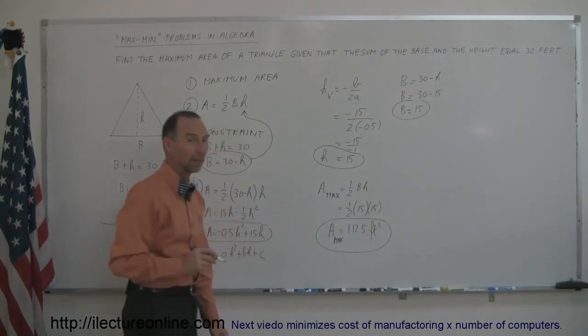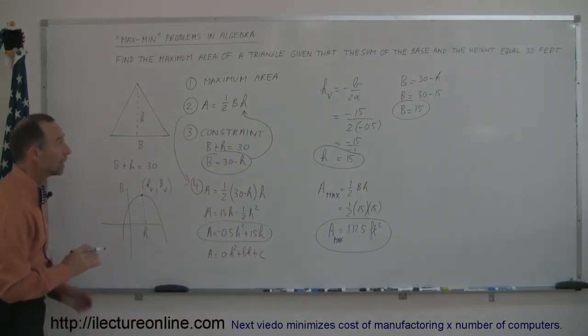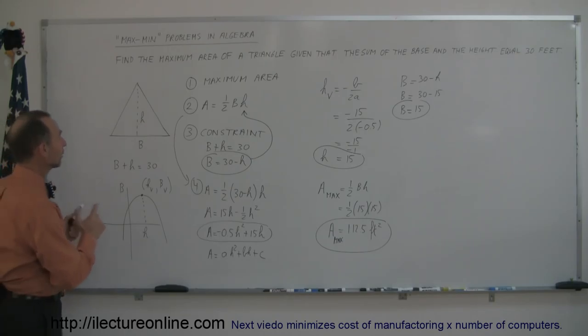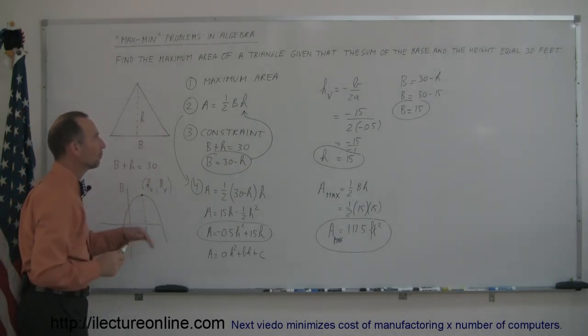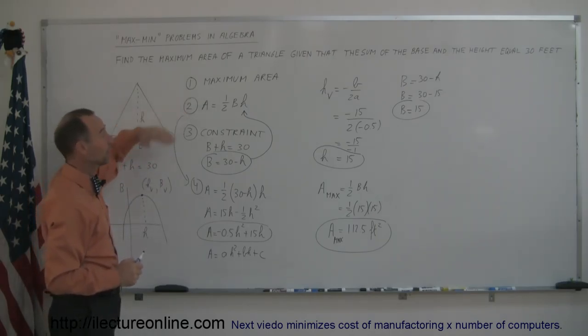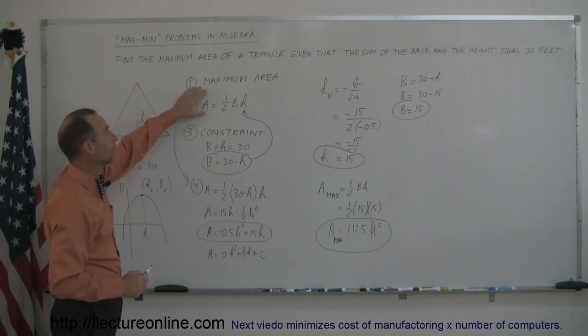And that's how you do a problem like that. So quickly recap what we just did. You were given a triangle. You were given that the sum of the base plus the height equals 30 feet. You first determine what you're trying to maximize. You then find an equation defining the variable that you're trying to maximize, so you're trying to maximize the area, and the area of the triangle is one-half the base times the height.